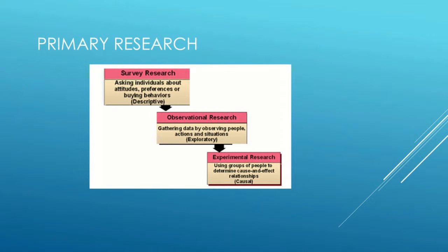Essentially, there are three major sources of primary research. Surveys, in which we go out and we ask respondents for a response to some questions that we have. Observation, in which we watch the world unfold as it does and take notes based on that. And thirdly, experiments, where we actually test a hypothesis using a controlled testing mechanism called an experiment. We'll look at each of those over the course of the next few series of videos.